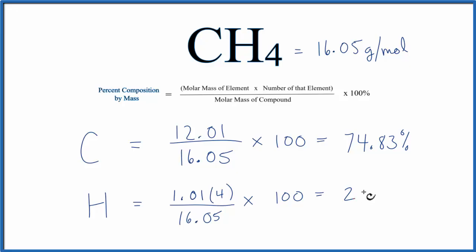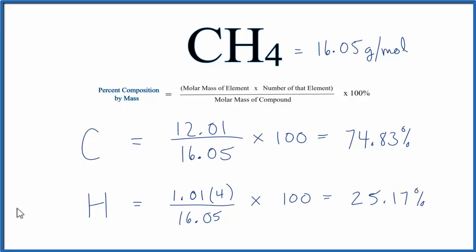Note that my periodic table rounds to two digits after the decimal place. If yours is different, you may get a slightly different answer here, but these two numbers should add up to very close to 100%. This is Dr. B with the percent composition for CH4. And thanks for watchin'.